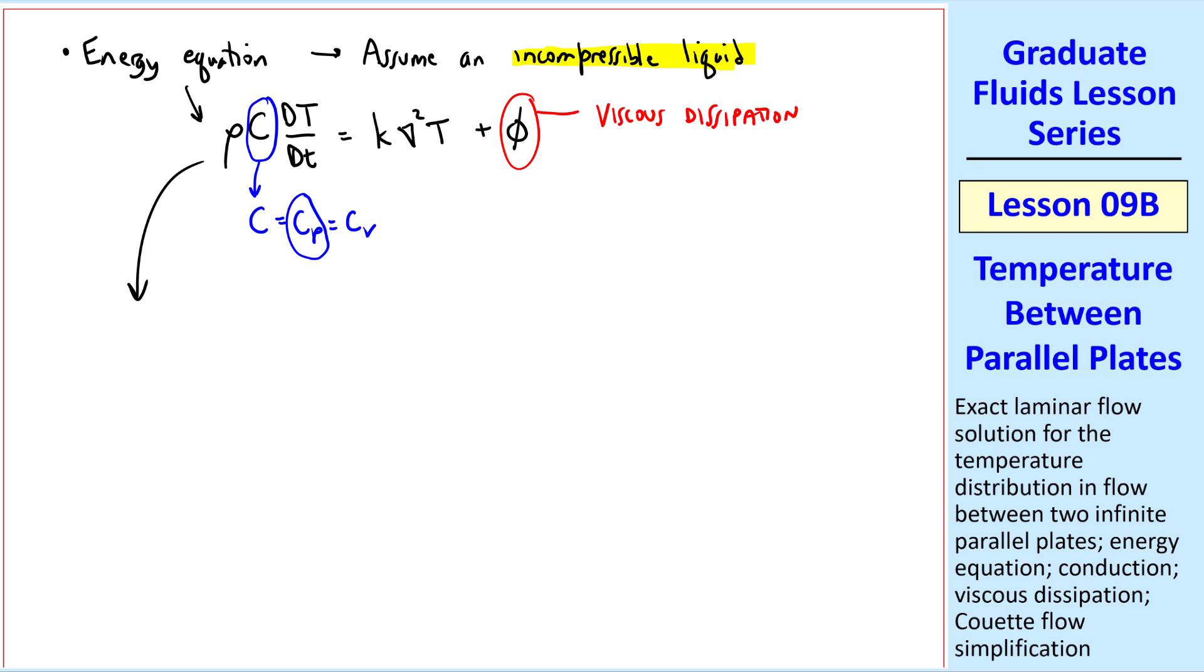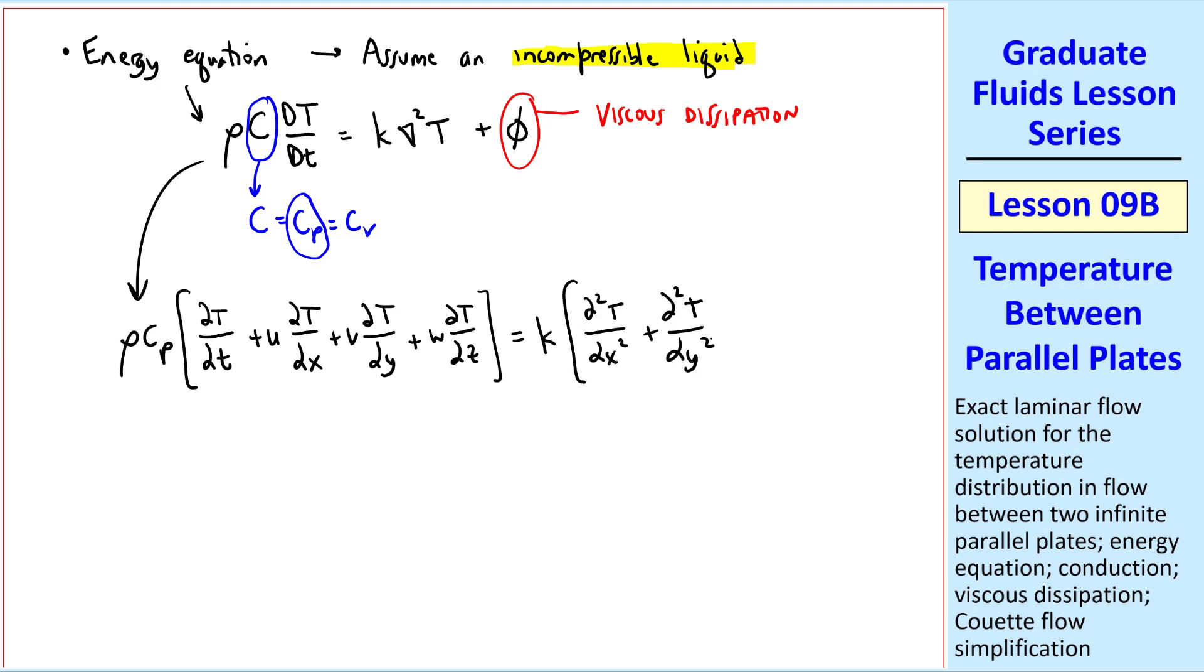Expanding out this scalar equation, we have rho cp times the quantity del T del T plus u del T del x plus v del T del y plus w del T del z by expanding the material derivative in Cartesian coordinates, equal k times the Laplacian of temperature, plus phi. I'll look at this in a moment. First, let's cross off all the terms that go to zero.